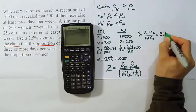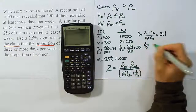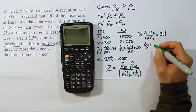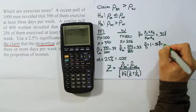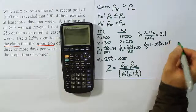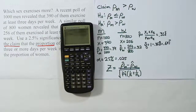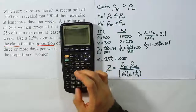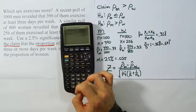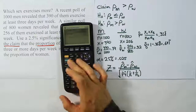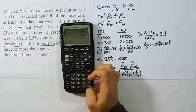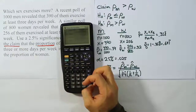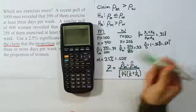Q-hat is 1 minus our pooled p-hat, so 1 minus 0.3588 repeating, which gives 0.6411 repeating. I'm going to store both of these values in my calculator as P and Q so I avoid rounding errors when I plug them into the test formula.